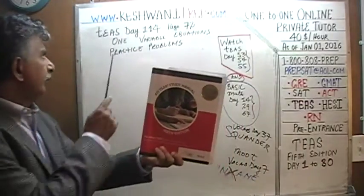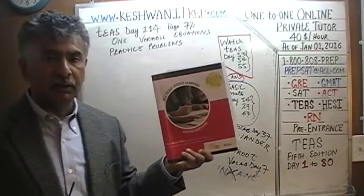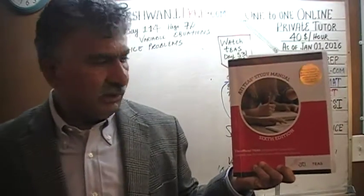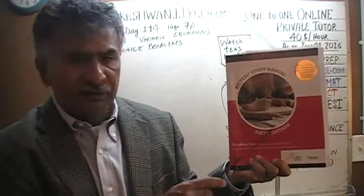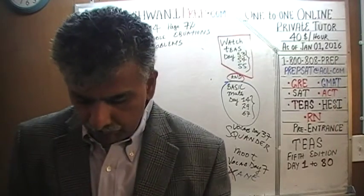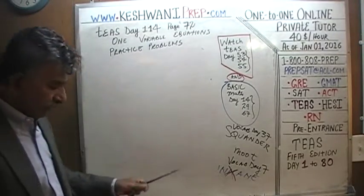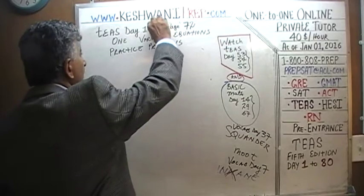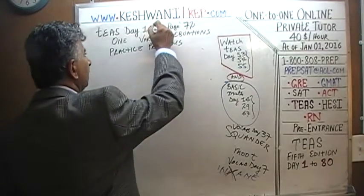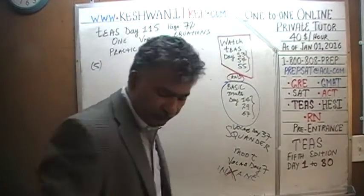Hello, my name is Keshwani — that's K-E-S-H-W-A-N-I. We are here because we want to prepare for the TEAS. We have been solving TEAS math problems out of this book, the TEAS Study Manual, 6th edition. If you do not own this book already, purchase one immediately — you are going to need it. We are on page number 72. Today is lesson number 115, and today we will continue what we started yesterday: solving one-variable equations. We are going to begin with practice problem number 5; we did 1 through 4 yesterday.